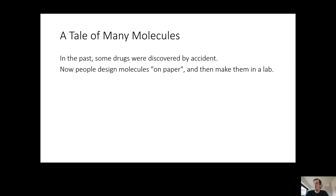What did people do in the past? In the past, people found some drugs by accident — they mixed a few things, and what came out happened to work and cure some disease. That's fine, but nowadays people try to be a little bit more systematic.